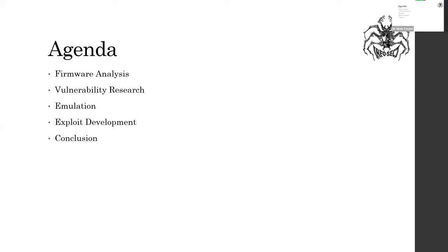I'm going to talk about what you do when you're looking at an embedded device. You start off by getting the firmware. Once you've got the firmware — maybe even the source code — you want to do vulnerability research and hopefully find a bug to exploit. As part of the exploit development process, you probably don't want to start writing an exploit on the real device, so you want to emulate that device and develop your exploit within that framework.